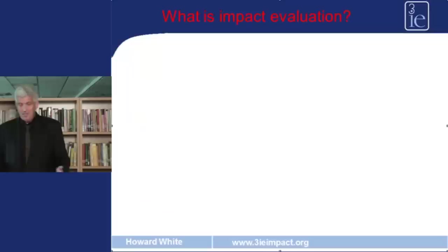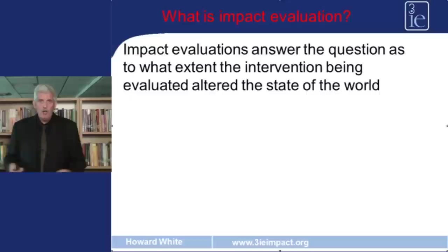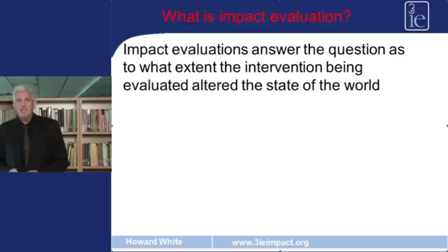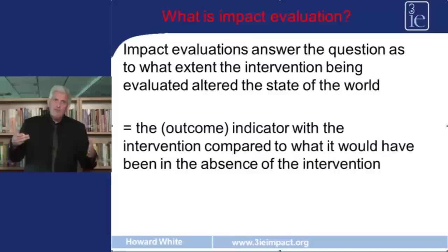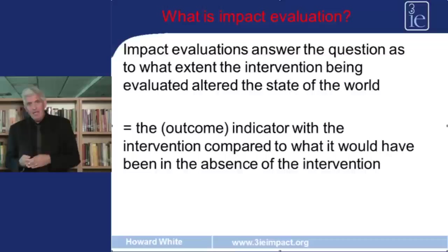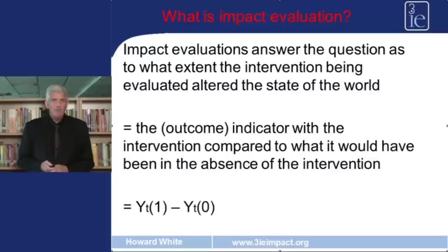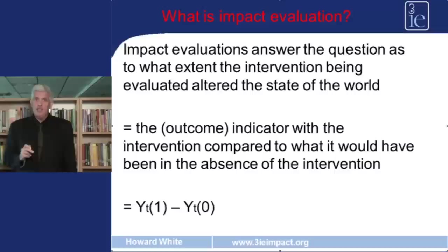More specifically, impact evaluation attempts to answer the question: what difference did an intervention — a project or programme — make to the state of the world? We can formalise that by asking: what were the values of the outcome indicators with the project compared to what they would have been in the absence of the project? The Y refers to the outcome we're looking at, such as employment in project areas, and T refers to the time at which we're measuring that outcome — the end line after the project.